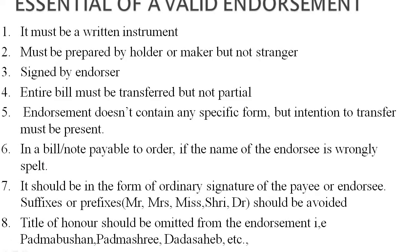Next is the essentials of a valid endorsement — what elements are required in the endorsement process. The first essential is that it must be a written instrument, signed on the back of the instrument, on the face, or on a slip of paper. The second essential is that it must be prepared by the holder or maker, but not a stranger. Endorsement is essentially made by the maker or holder of the instrument — a third party cannot perform this kind of endorsement. Only the maker or holder has the right to write and sign an endorsement.